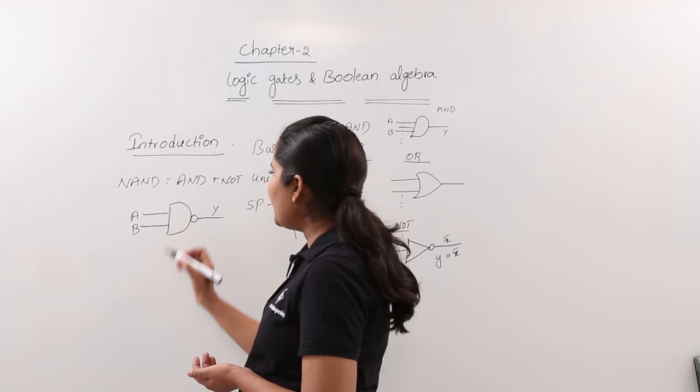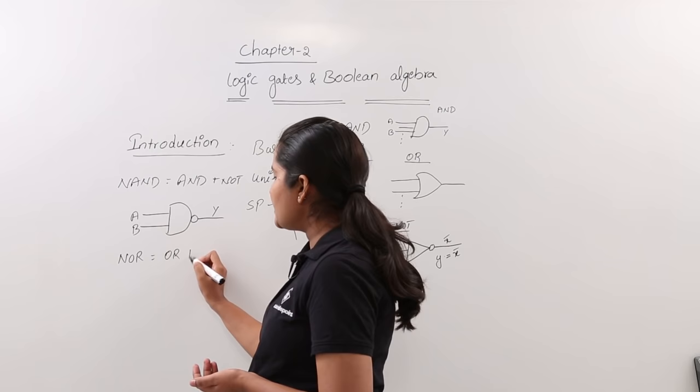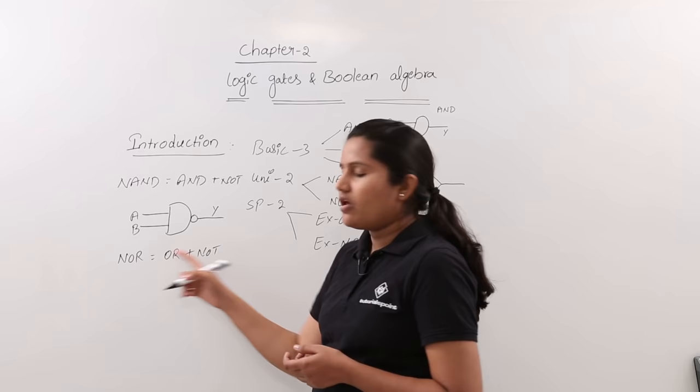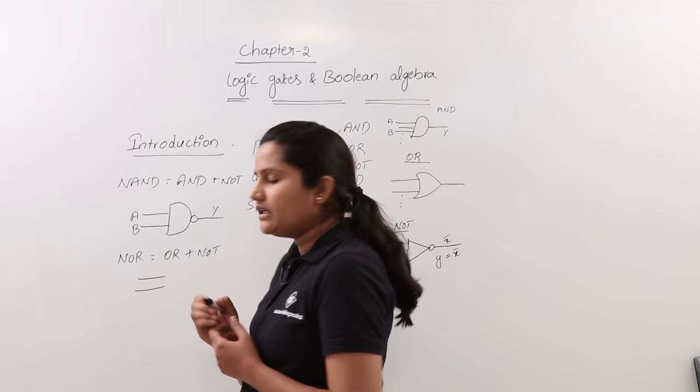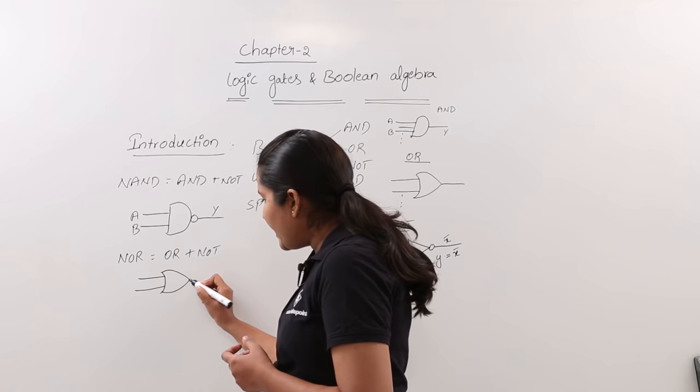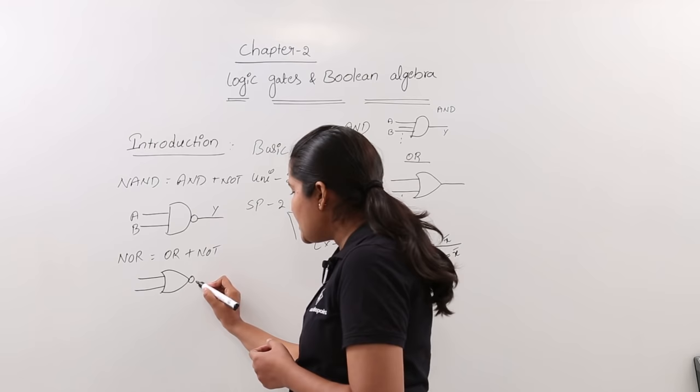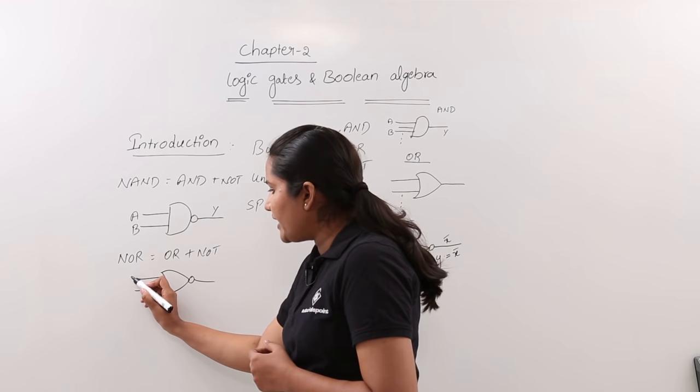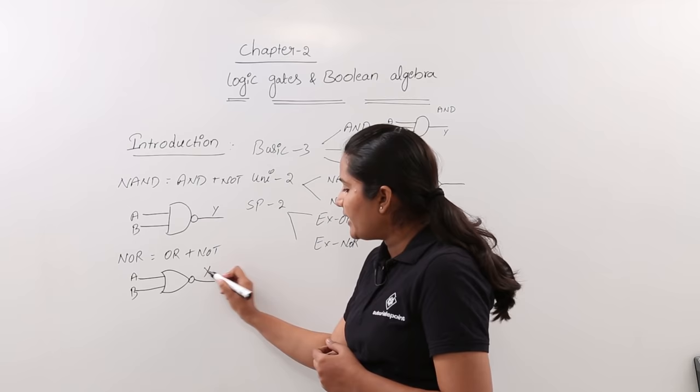Similarly, NOR gate is equal to OR followed by NOT. OR followed by NOT is nothing but the NOR gate. The logic symbol for the NOR gate is the OR gate symbol with a bubble at the output. This is the logic symbol for the NOR gate with input lines A and B and output Y.